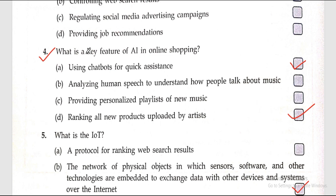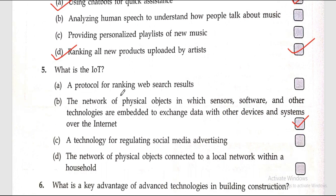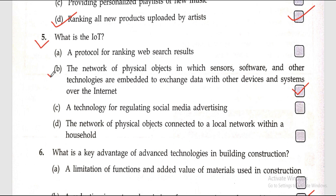Question four: what is the key feature of AI in online shopping? The accurate answers are: using chatbots for quick assistance, and ranking all new products uploaded by artificial intelligence. Question five: what is IoT? The accurate answer is the network of physical objects in which sensors, software, and other technologies are embedded to exchange data with other devices and systems over the internet.